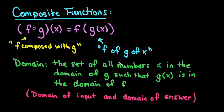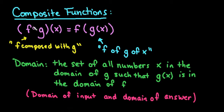For this video I'm going to go over an example of a composite function. A composite function is basically just taking a second function and putting it into the first function. There are two different notations: you can have what looks like 'fog' — f of g — read as 'f of g of x' or 'f composed with g.' The open circle means a composite function; it does not mean to multiply. What it means is to take your g(x) equation and replace all x's in your f(x) equation with your g(x) equation.